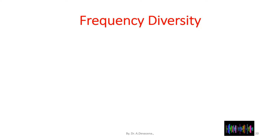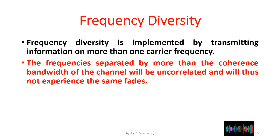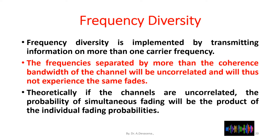Frequency diversity is implemented by transmitting information on more than one carrier frequency. Frequencies separated by more than the coherence bandwidth of the channel will be uncorrelated and will thus not experience the same fades. Theoretically, if the channels are uncorrelated, the probability of simultaneous fading will be the product of the individual fading probabilities.